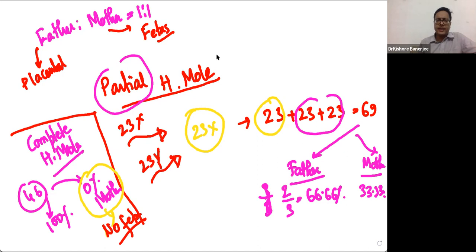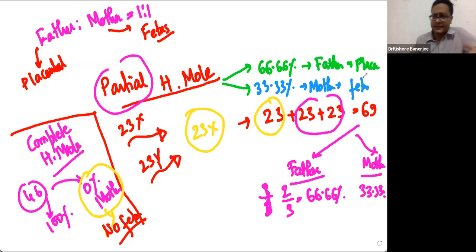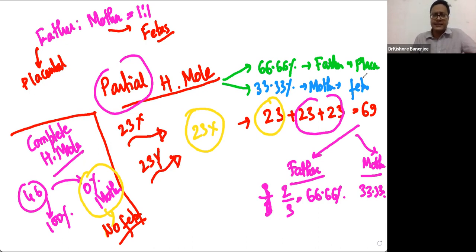In partial mole the story is a little different: 66.66% of DNA is from the father — which drives placental growth — and 33.33% is from the mother. Because there is some maternal contribution, some fetal development does occur, but it is mostly a malformed, non-viable fetus. That is why some fetal development is typically seen in partial mole but not in complete mole.